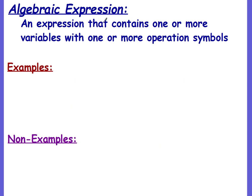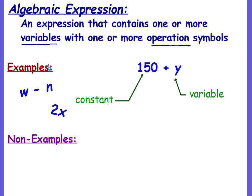Alright, an algebraic expression is an expression that contains one or more variables with one or more operation symbols. Okay, so what are some examples? Right here, make sure you write this down. 150 plus y - okay, the 150 is your constant. Okay, it's the number that does not change. Y is the variable. Okay, this is the unknown, and it can change.